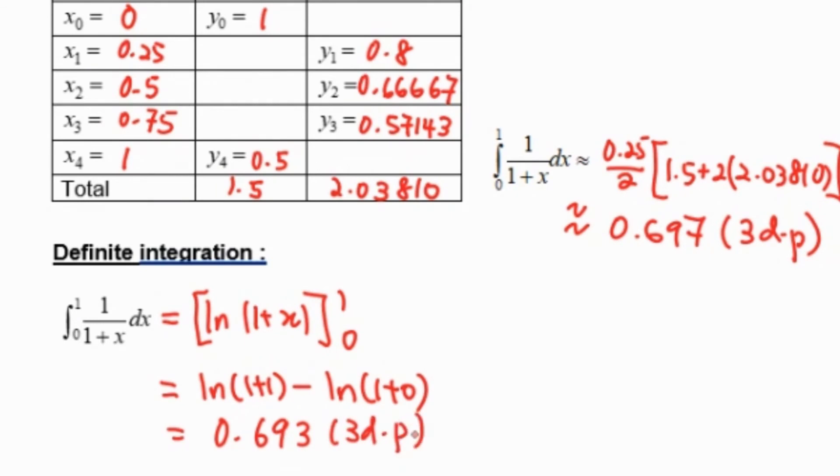Then we need to compare these two answers. Notice that by using trapezoidal rule, the answer is 0.697, and the answer using definite integration is 0.693. When we compare these two answers, the difference is 0.004. Why does it have a different value? Because trapezoidal rule is just an approximate answer.